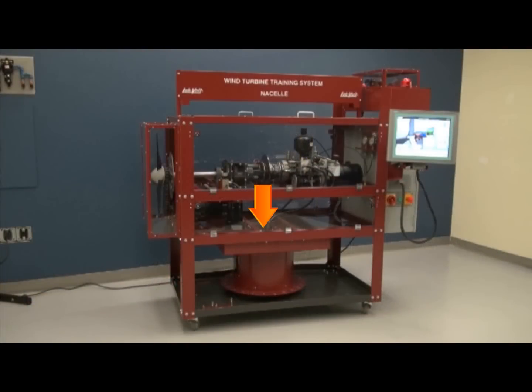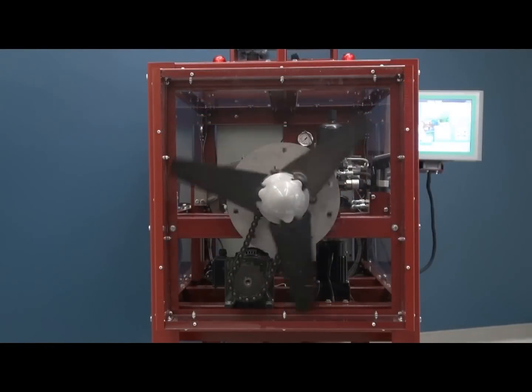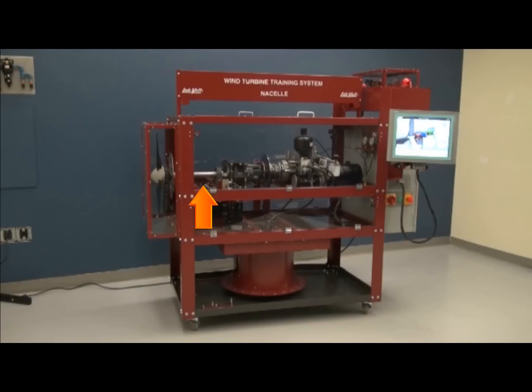First, you'll see the yaw system, which enables the nacelle to rotate to face the wind. After that, we add a hub which will get the wind energy in the main shaft and rotate here until it reaches the gearbox.